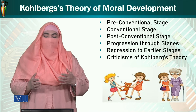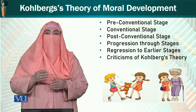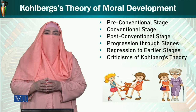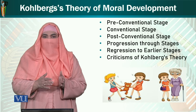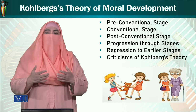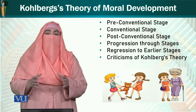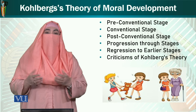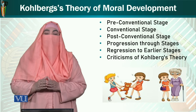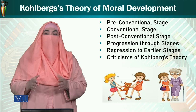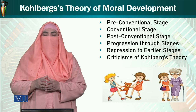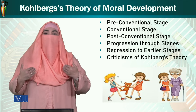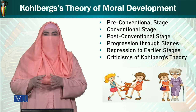Conventional stage کے بعد post-conventional stage آتی ہے جہاں وہ ان قوانین کو چیلنج بھی کرے گا جن کو اب تک مانتا چلا آیا ہے. وہ سمجھتا ہے کہ قوانین انسانوں کے لیے ہیں، نہ کہ انسان قوانین کے لیے. اگر کوئی قانون کسی شخص کو نقصان پہنچا رہا ہے تو وہ اسے چیلنج کرے گا. آخری stage میں وہ اپنے گروپ اور ذاتی مفاد سے بالاتر ہو کر پوری انسانیت کی بھلائی کے لیے سوچتا ہے۔